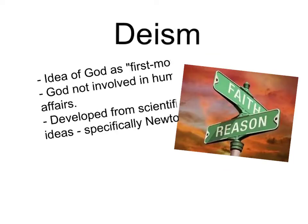One philosophical idea built upon by Voltaire and other philosophers that had an impact on religion was deism. This idea developed from the ideas of Newton and others, who saw the universe working according to natural laws without the direct influence of God. Deism proposed the idea of God as the first mover — he designed the universe, set its laws in motion, but was not involved in human affairs, creating miracles or disasters, or sending angels, demons, or anyone else to intervene. This is similar to the idea of God as the great clockmaker who started the clock but then let it run. Deism would influence many philosophers in both Europe and America, including many American founding fathers.